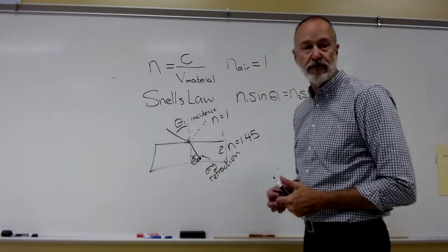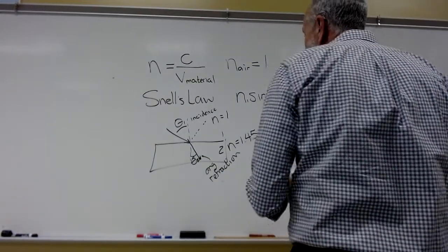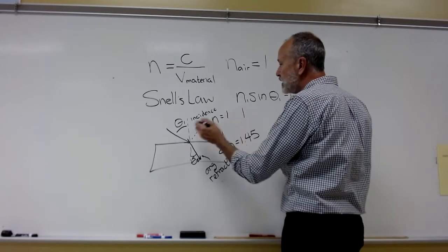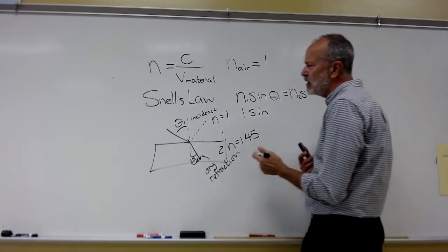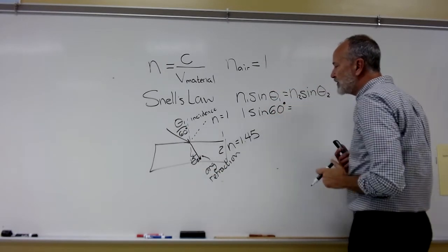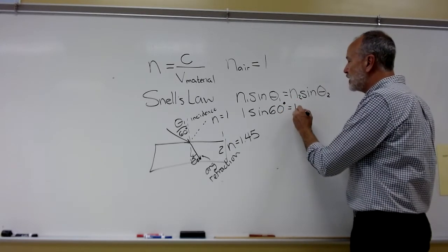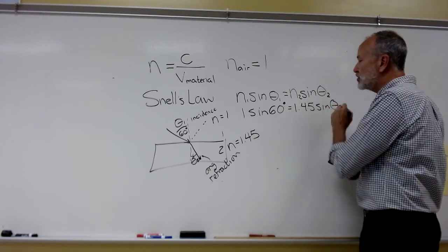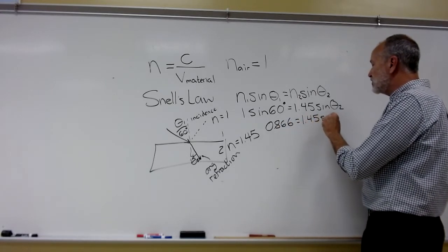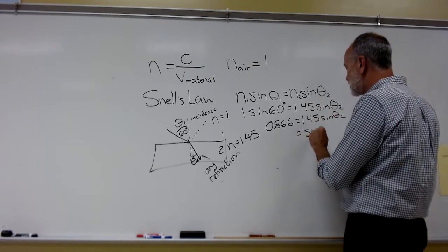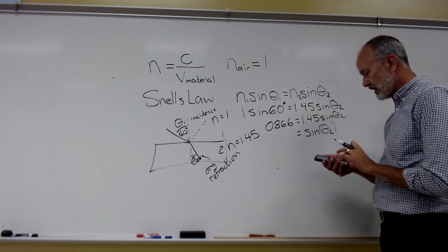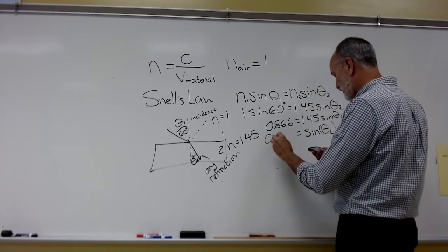So let's do this calculation right here. So if we do this, we have 1 sine of whatever angle there is in there. So let's find out if I shoot this in at 60 degrees. So 60 degrees, we want that in degrees. And then 1.45 sine of theta 2. Sine of 60 degrees is 0.866 equals 1.45 sine theta 2. Sine of theta 2 is going to be 0.866 divided by 1.45. That ends up being 0.597.